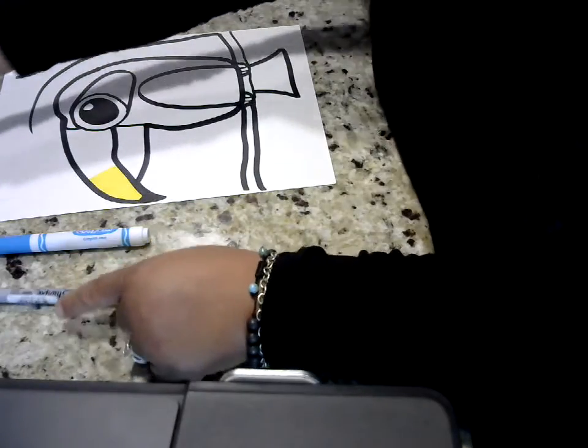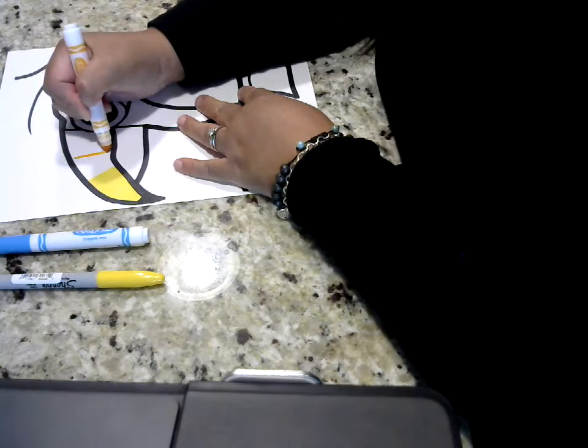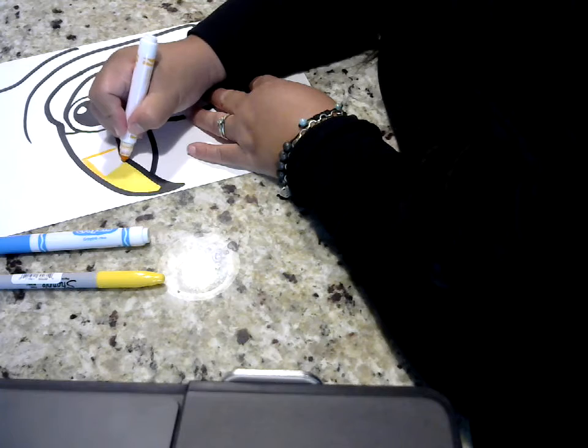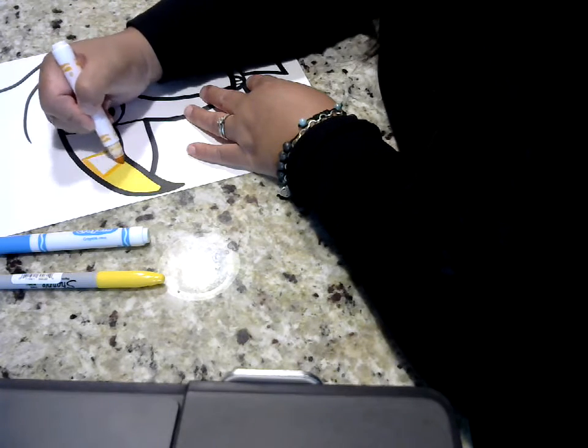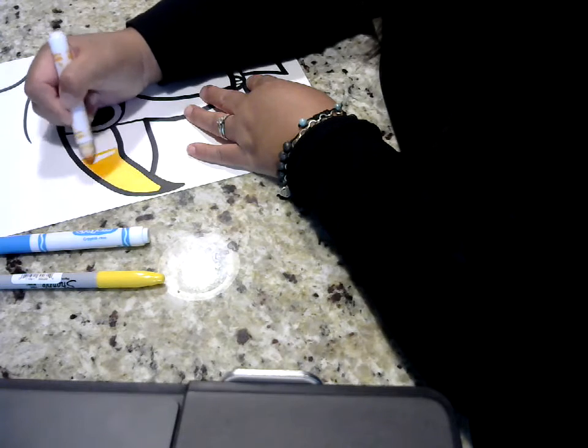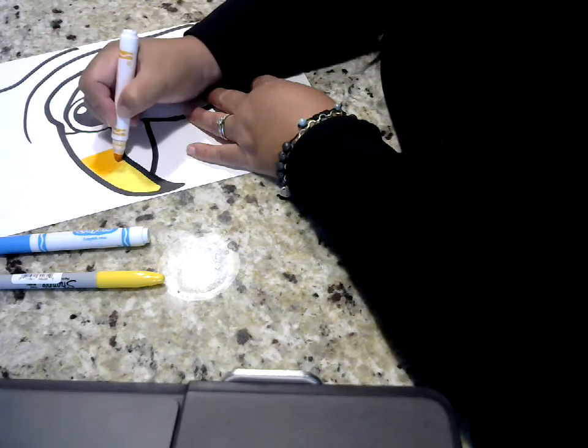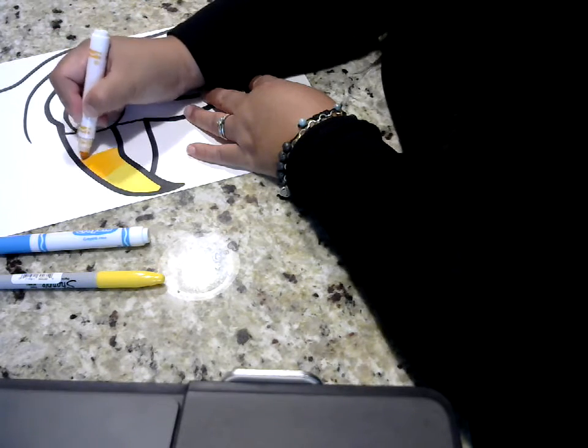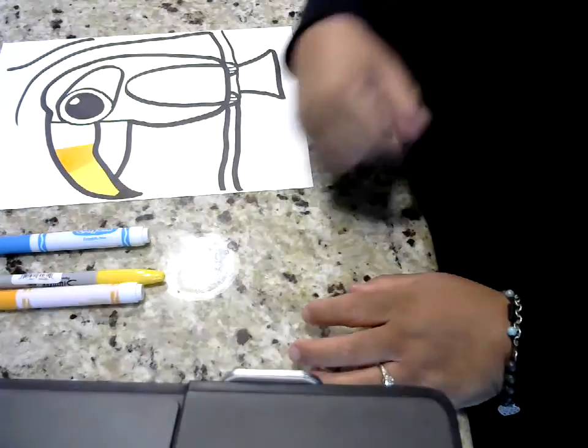And then we can color it to maybe some orange. And the last part, maybe let's do some green. And so the toucan, they are very bright colors. And that's so that can help them attract a mate.